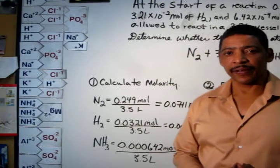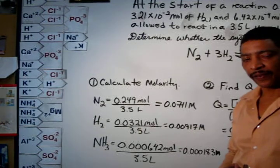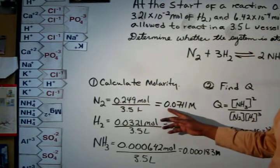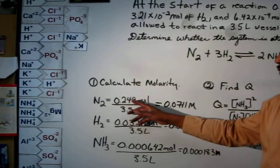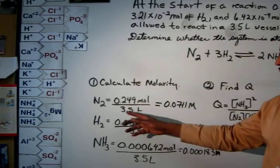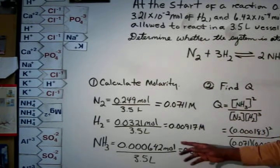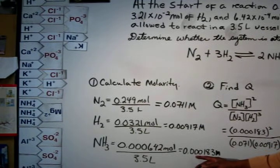Since moles were given in the practice problem, it is appropriate to calculate the molarity of each species. The molarity of the nitrogen is found to be 0.0711 mol, determined by dividing the moles, 0.249, by the liters, 3.5. The molarity of the hydrogen gas was found to be 0.00917 mol, and the molarity of the ammonia was found to be 0.000183 mol.